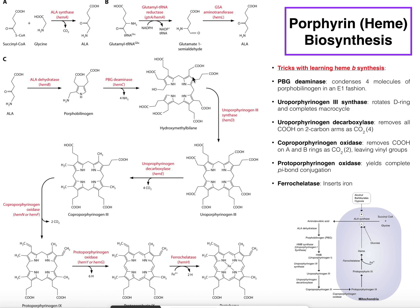A couple of things to note about hydroxymethyl bilane: first, it has another name — pre-uroporphyrinogen 3. Second, notice that we have four pyrrole rings, which is why hemes and porphyrins are sometimes referred to as tetrapyrroles. Going clockwise starting at the top, they're labeled the A ring, B ring, C ring, and D ring. Third, each pyrrole ring — other than the A ring, which has a hydroxymethyl group — has a two-carbon arm followed by a three-carbon arm, each ending in a carboxyl group, repeating as you go around clockwise.